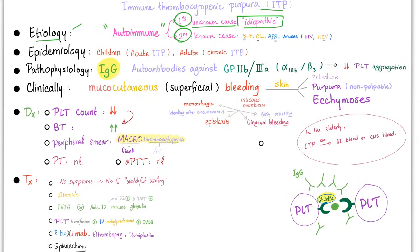Pathophysiology: IgG antibodies against GP2B3A lead to decreased platelet aggregation, and clinically, mucocutaneous bleeding. The purpura in ITP is non-palpable — please remember this. For diagnosis: platelet count is low, which prolongs bleeding time. Peripheral smear shows macrothrombocytopenia — giant in size and few in number. ITP was one of the causes of giant platelets. Since secondary hemostasis is fine, PT and PTT are normal.